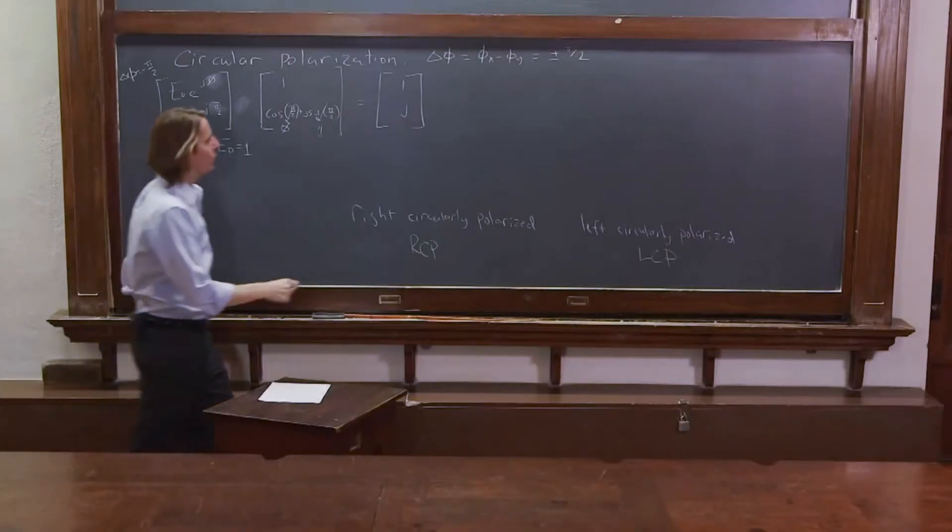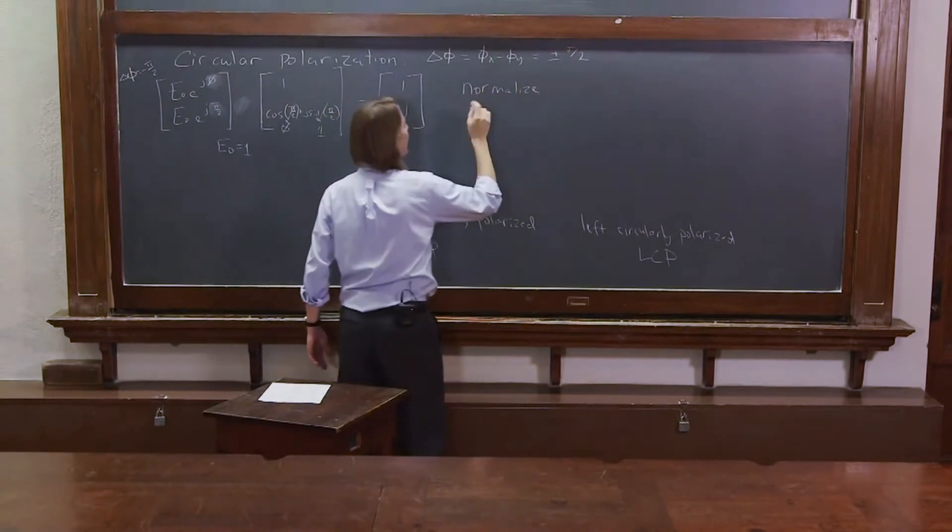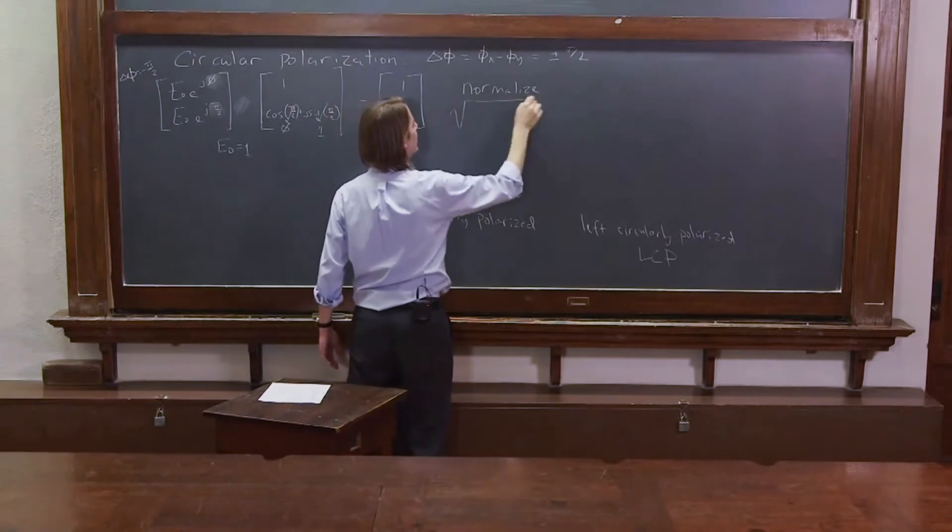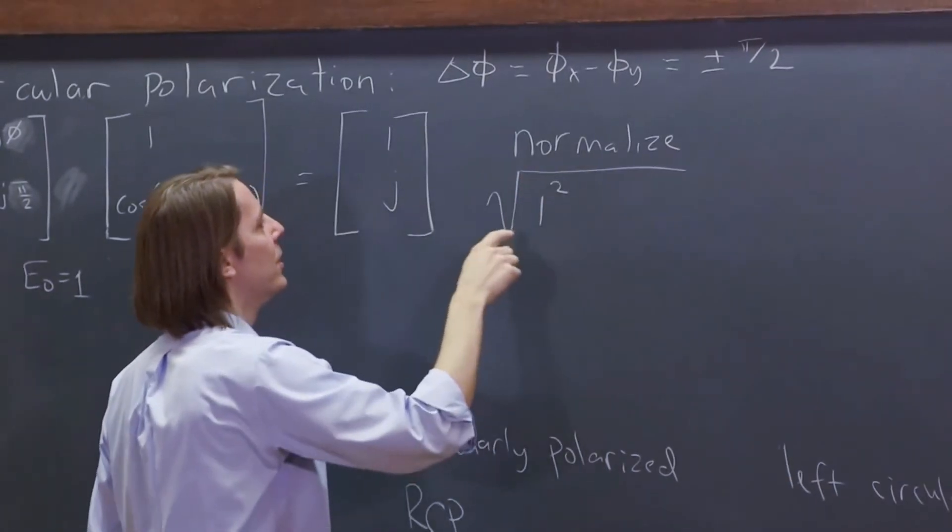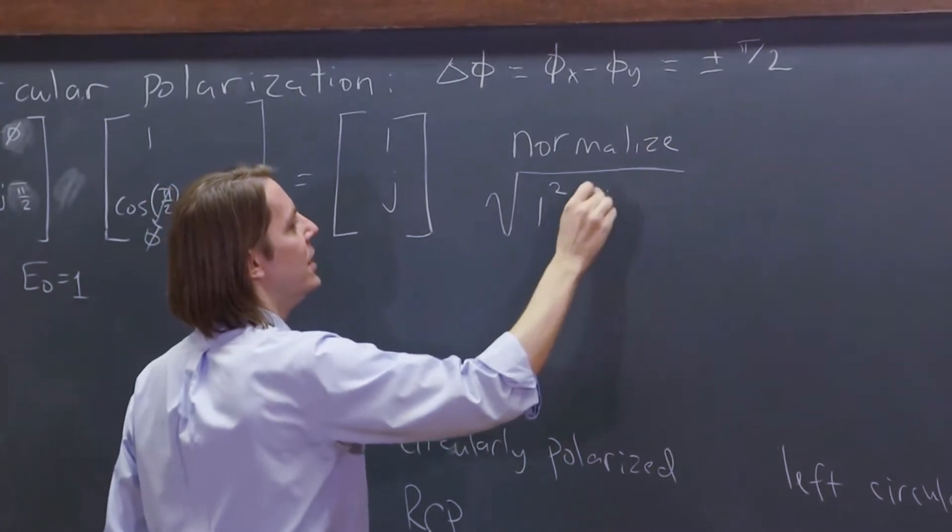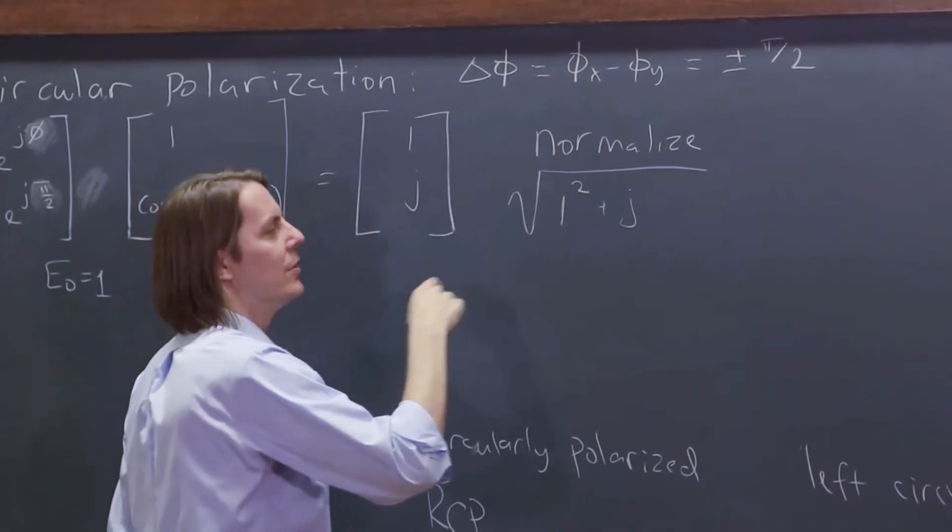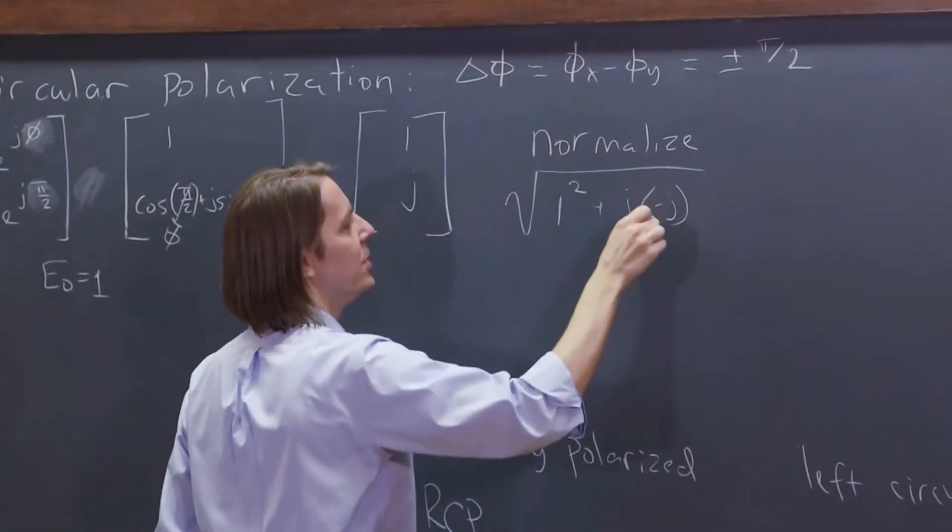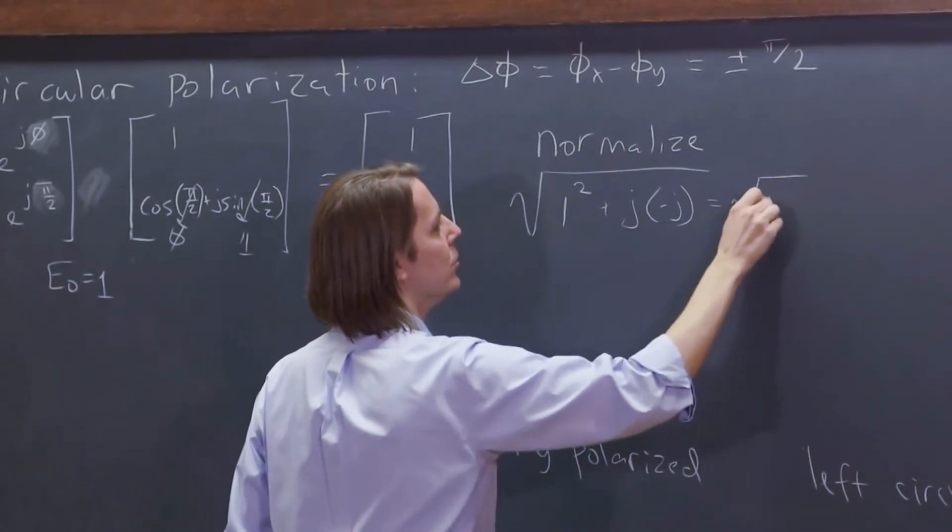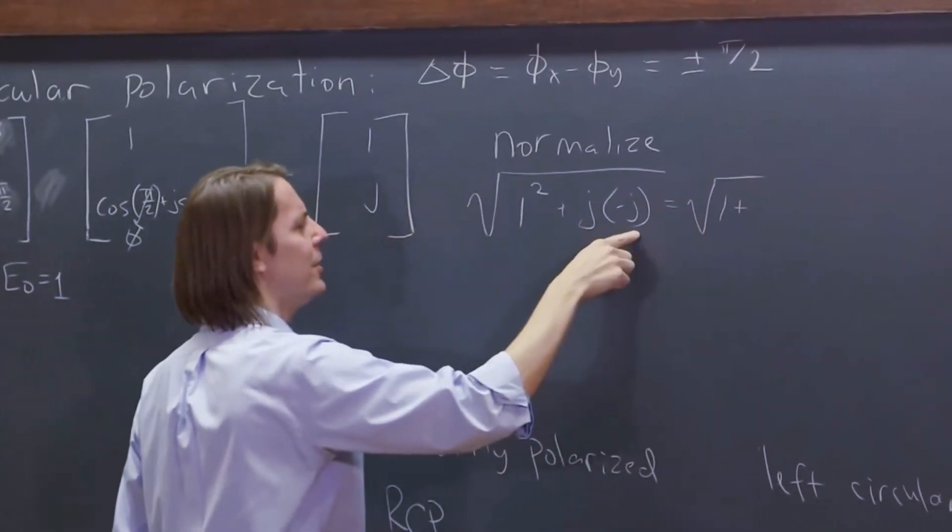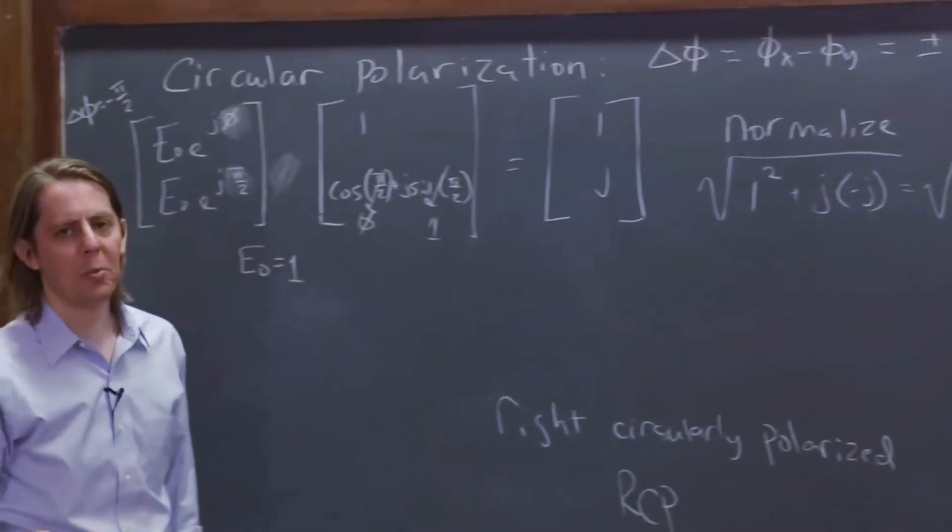And then we can normalize it. And we think, well, what's the amplitude of this thing? It's the square root of 1 times 1 star, which is 1 squared, plus j times complex conjugate - you just make the square root of negative 1 negative, so times minus j. And that's equal to the square root of 1 plus j times minus j is minus 1, and the minus makes it another 1.